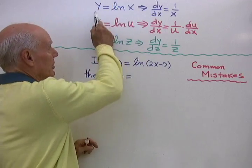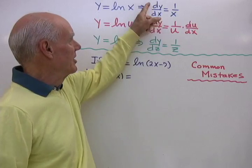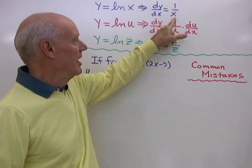So first of all for review, if y is equal to natural log x, then the derivative of y with respect to x is 1 over x.